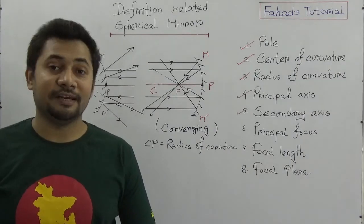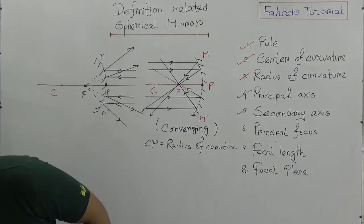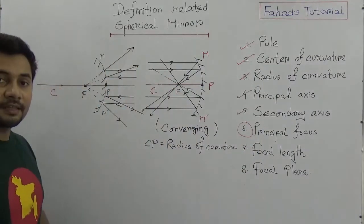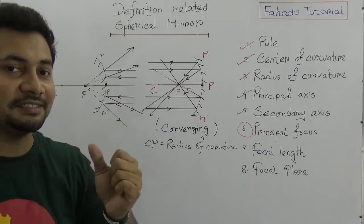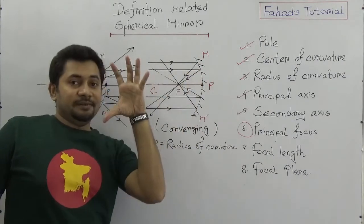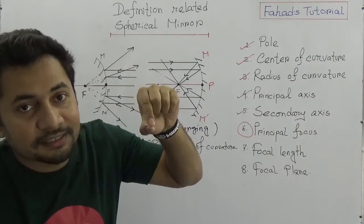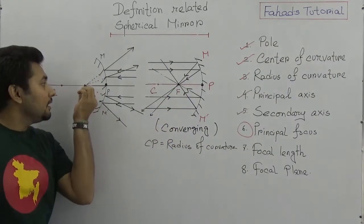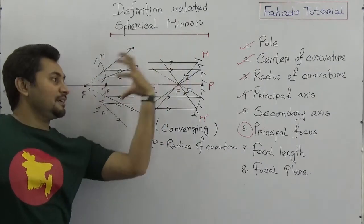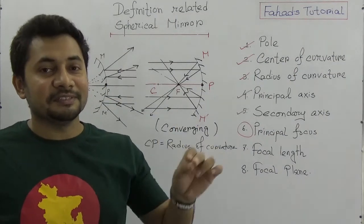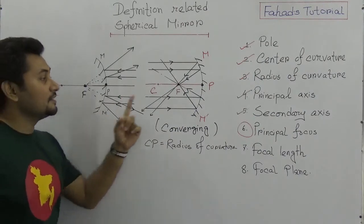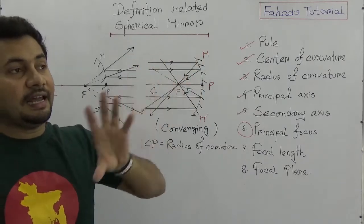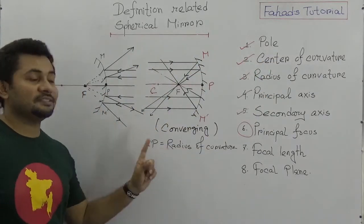The principal focus of the concave mirror is a real point where rays actually converge, so it is visible. In the case of a convex mirror, the focus is an imaginary point — it only appears that the reflected rays are diverging from that focus. So the focus of a concave mirror is real, and the focus of a convex mirror is imaginary.